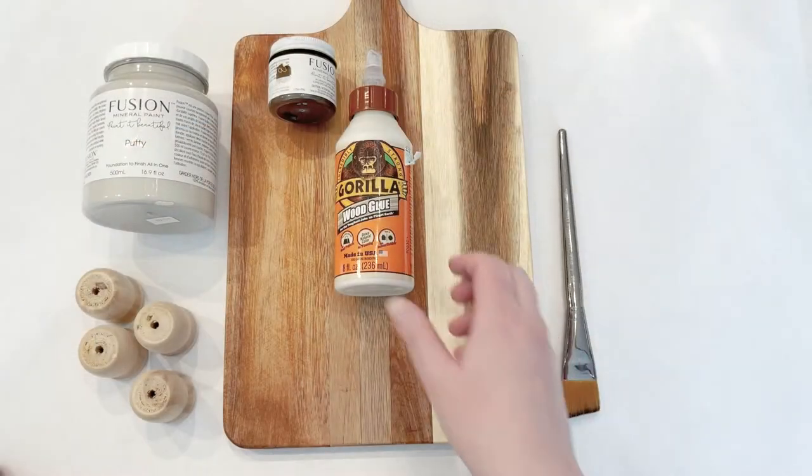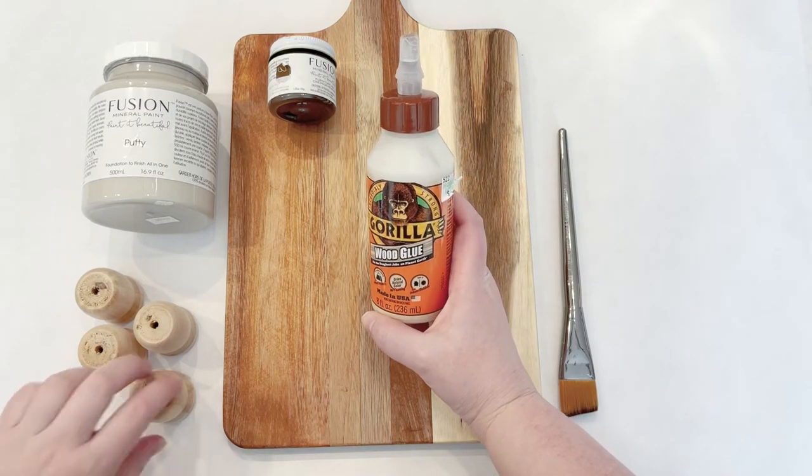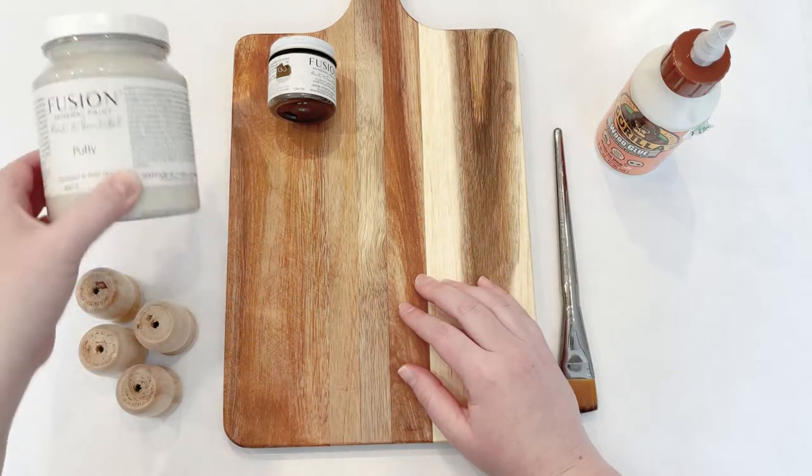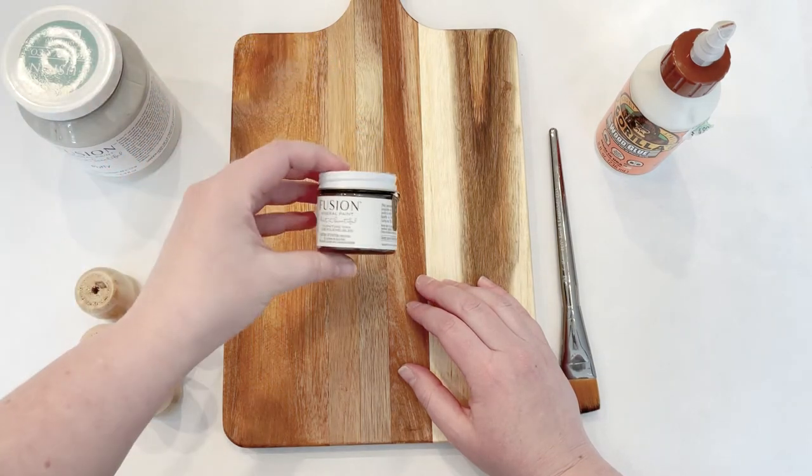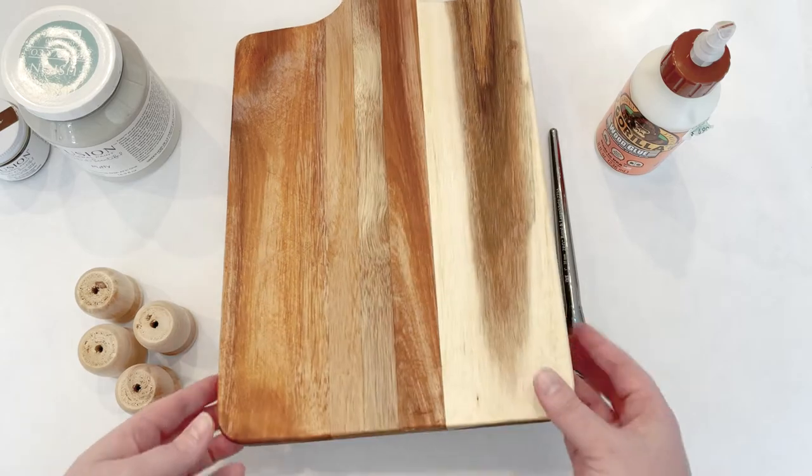To get started you need just a couple of items. You need wood glue. I like this gorilla wood glue. You need a couple of these wooden candle holders from Hobby Lobby. And then you're going to need some chalk paint or mineral paint and some wax or polycrylic to seal your piece.